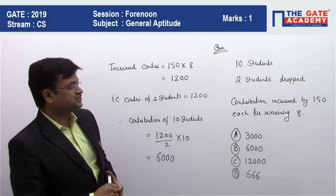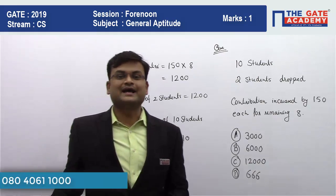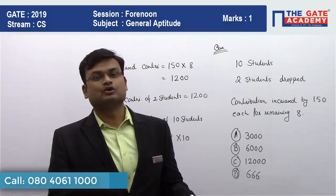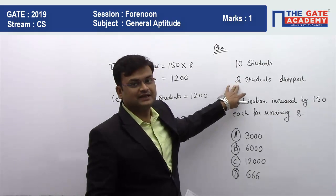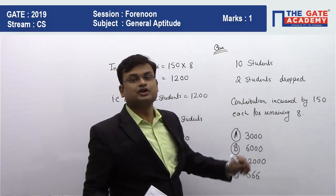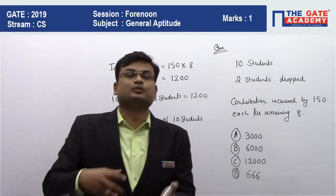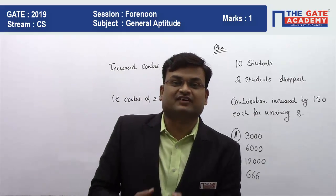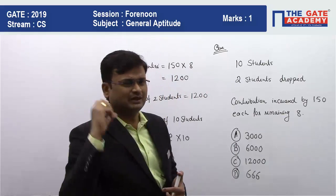The question says that there are 10 students who decided to buy a gift for their teacher by doing equal contribution, but two students dropped out. So the remaining eight students' contribution increased by 150 rupees each. The question asks: what was the price of the gift? It is a very simple question.